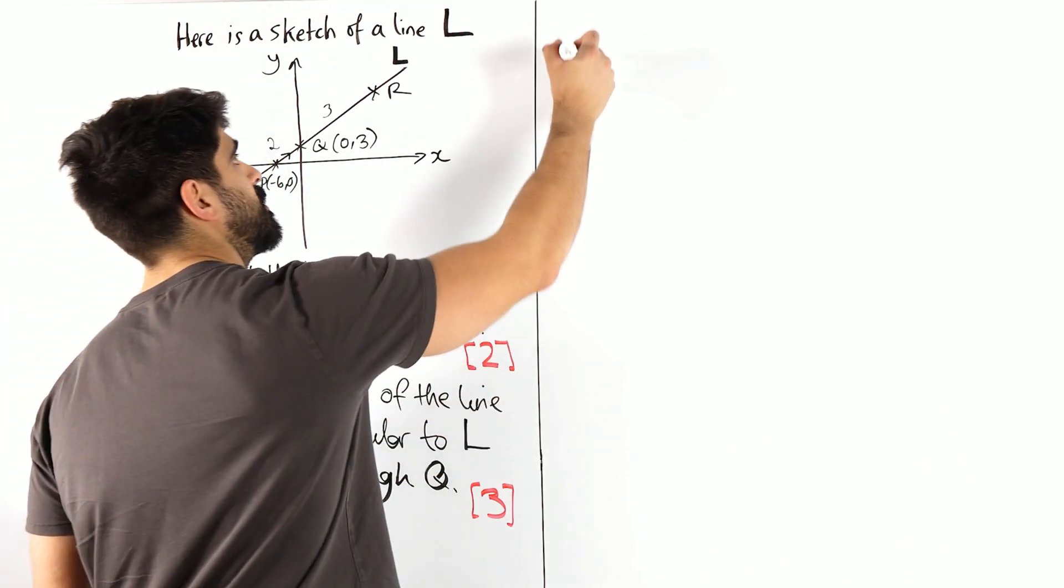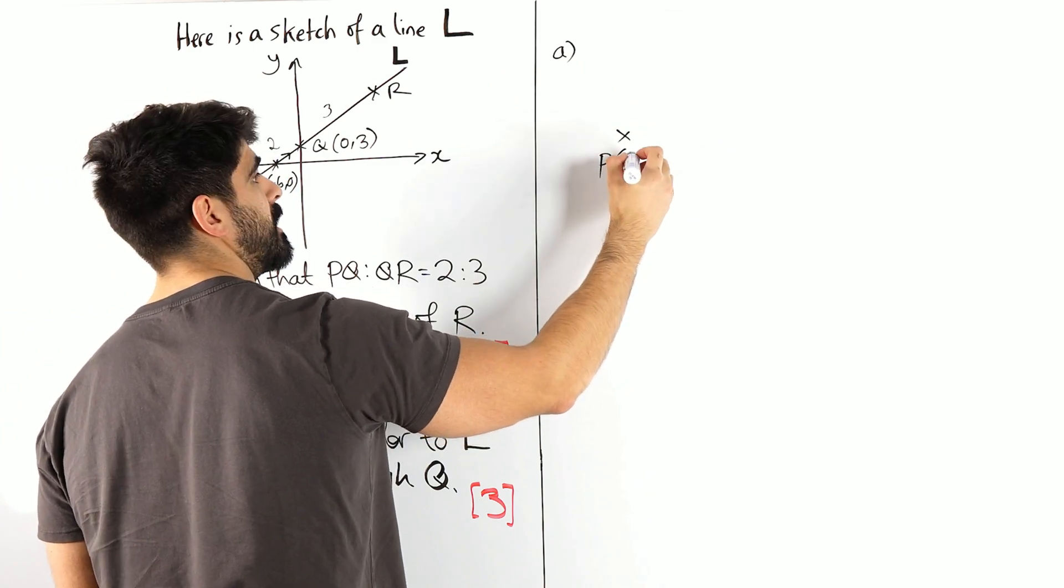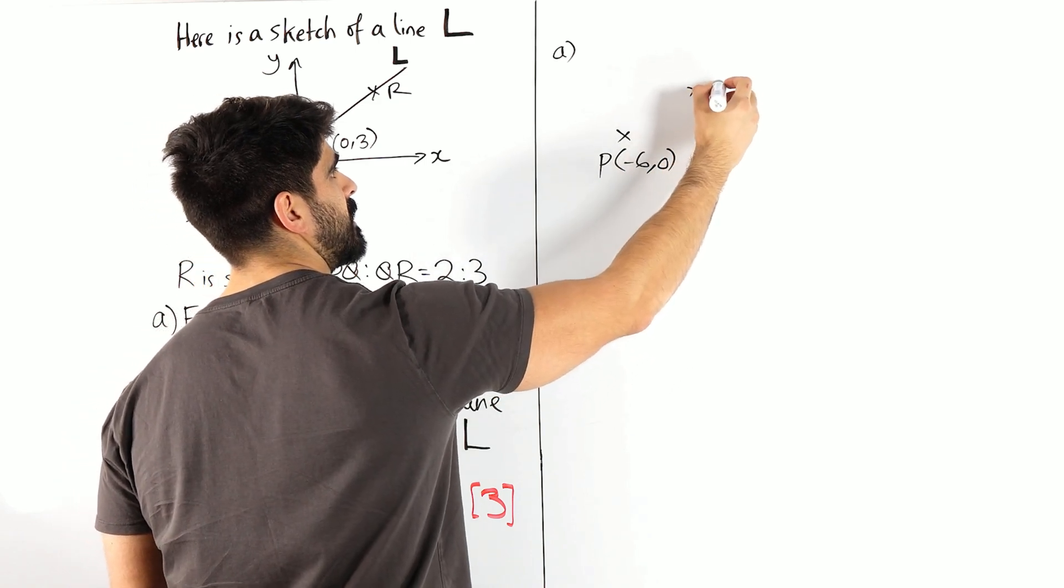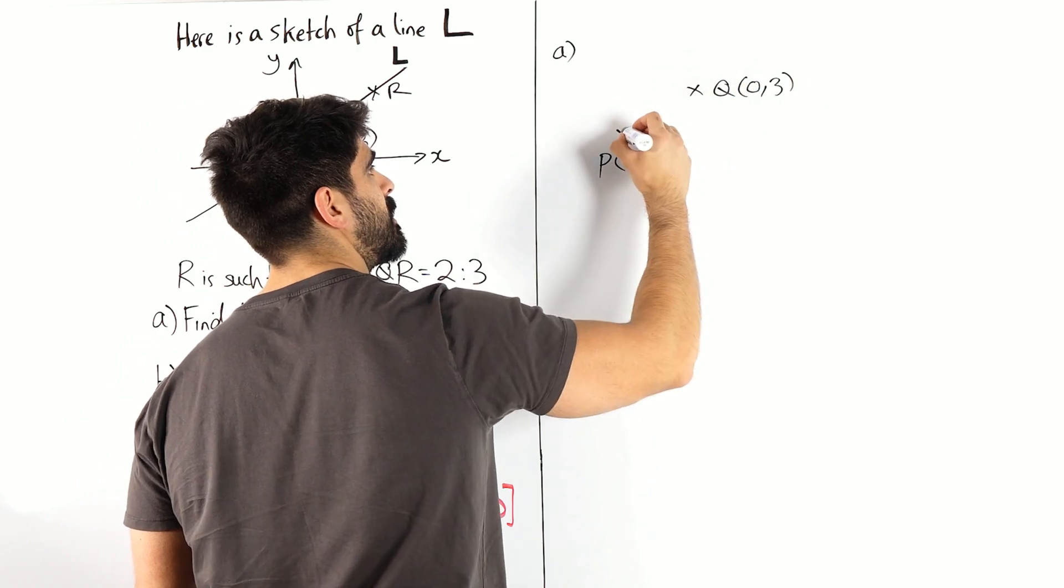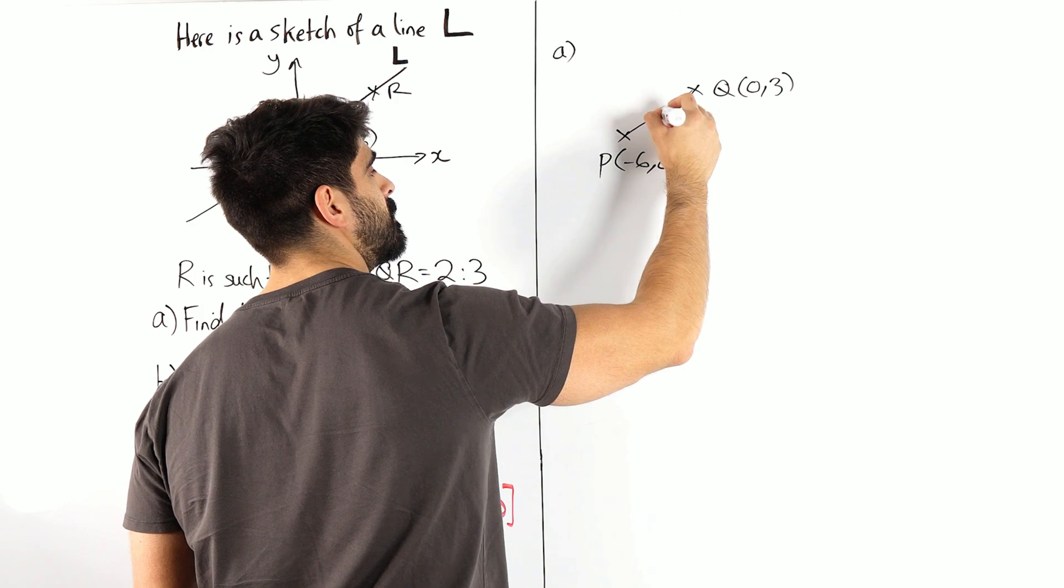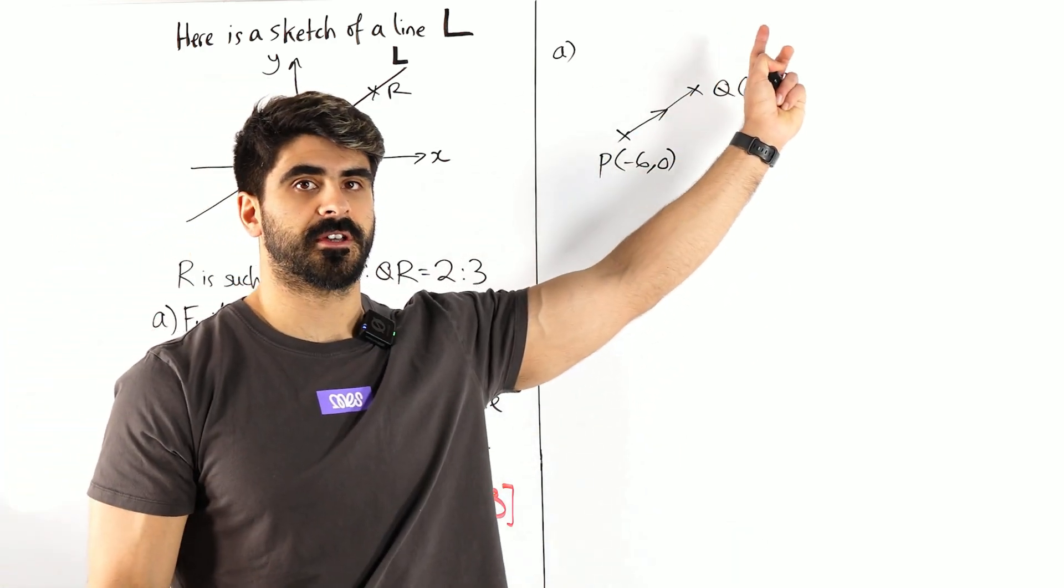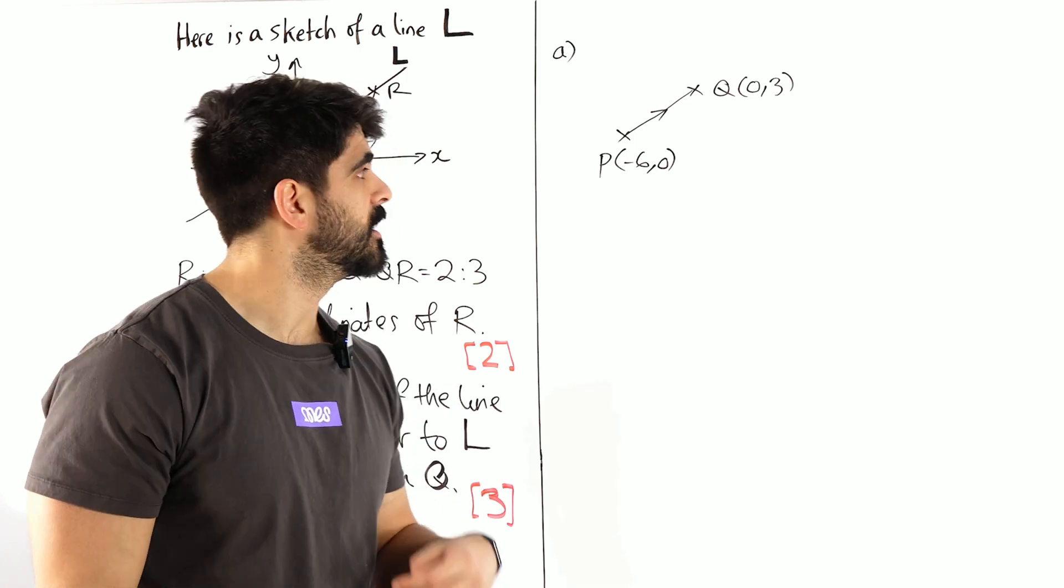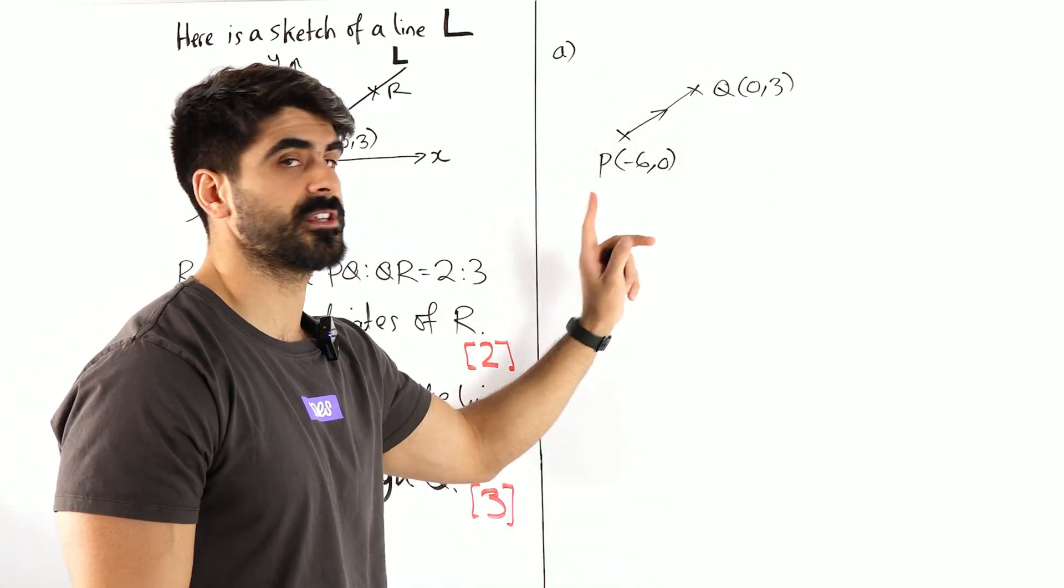Okay, so if I just do another sketch here, we have P which is at minus 6, 0 and we have Q over here which is at 0, 3. How do we go from one to the other? You're just saying how much across you're going and how much up you're going and the easiest way to find this out if you don't have a diagram is to just subtract the coordinates. It's like vectors.